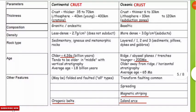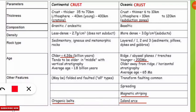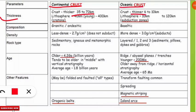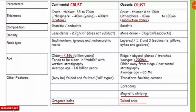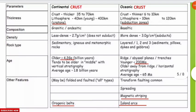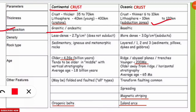Now let's look at a comparison table between continental crust and oceanic crust. Continental crust thickness is 35 to 70 kilometers, whereas oceanic crust is thinner at approximately 6 to 10 kilometers. The composition of continental crust is mostly granitic or andesitic, made up of granite or andesite type rocks, whereas oceanic crust is made up of basaltic or basalt type rocks.